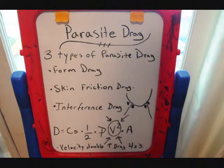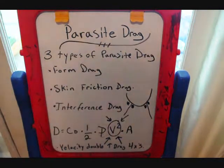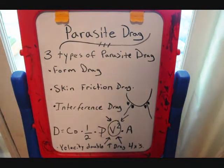Good afternoon, everybody. We're going to be talking about parasitic drag. The three kinds of parasitic drag are form drag, skin friction drag, and interference drag.